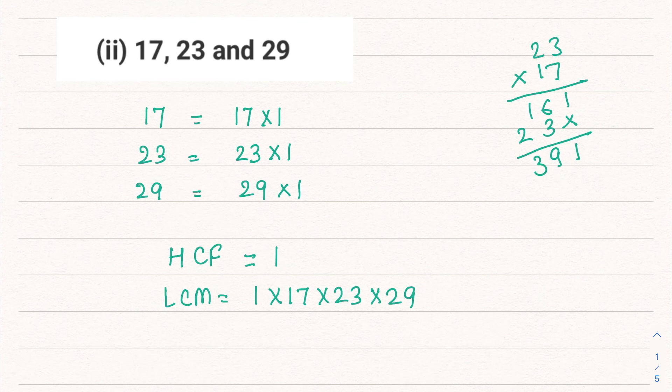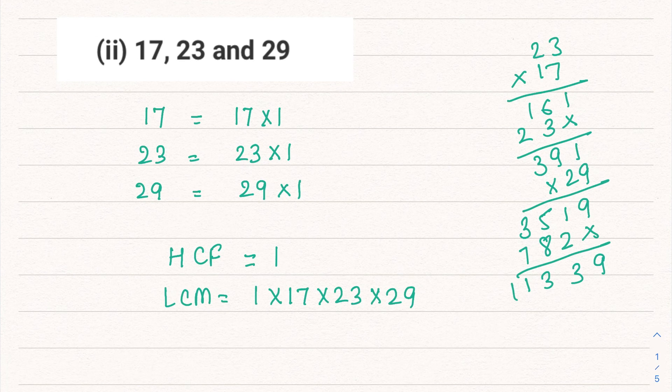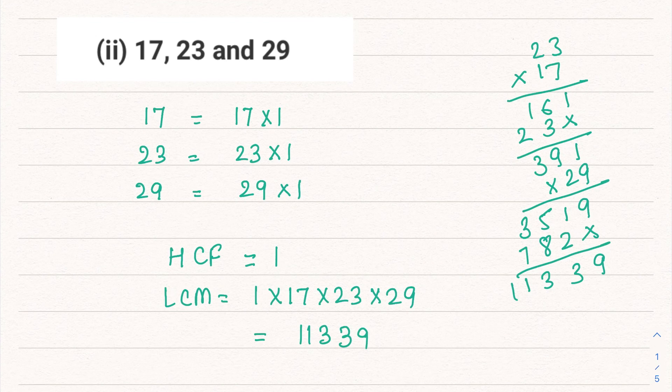This is coming to 391. Multiply this by 29. So our LCM is coming to 11,339. For this question, HCF is 1 and LCM is this.